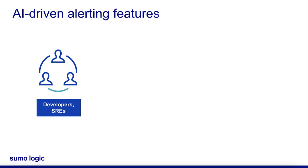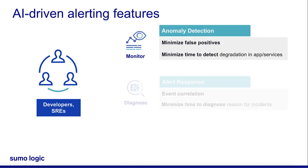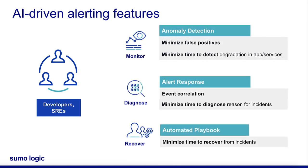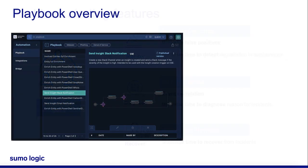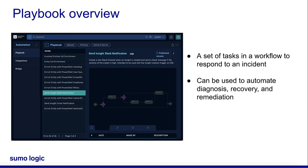AI-driven alerting packages two features. First, advanced anomaly detection in logs-based monitors helps you reduce alert noise — we call this feature anomaly monitors. Second, once a system finds an anomalous condition, AI-driven alerting also helps you reduce resolution time through automated playbooks. A playbook is a set of tasks in a workflow defined by developers or security engineers to respond to an incident. Playbooks can be used to automate diagnosis, recovery, and remediation. Sumo Logic Automation Service is a prerequisite for this capability.